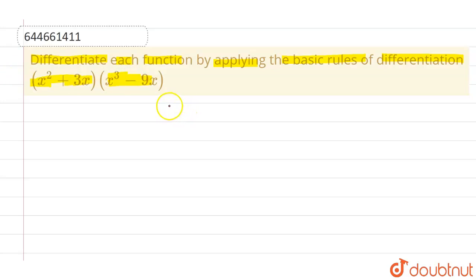Okay, so let me assume this given function as y. So y is given as x square plus 3x into x cube minus 9x. Now as you can see that this y is nothing but product of two functions.